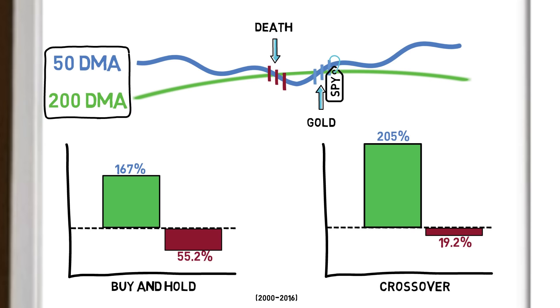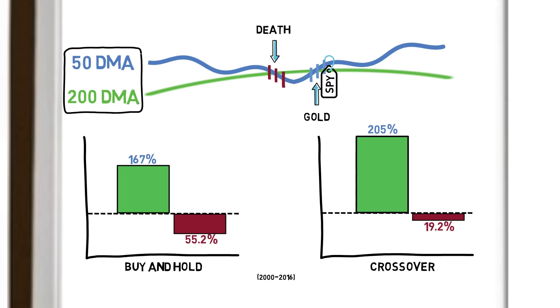Here we have another popular crossover system, this time using the 20 day and the 200 day moving averages. The same principle as the previous strategy but with faster buy and sell signal generation.